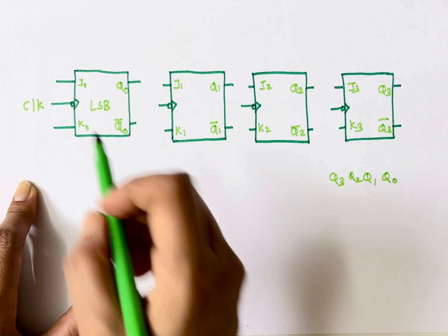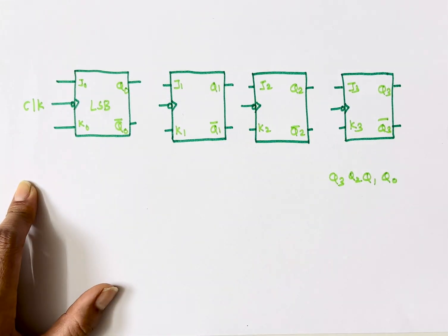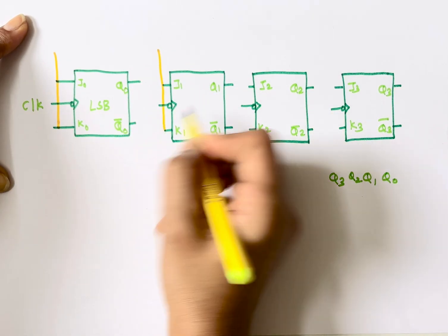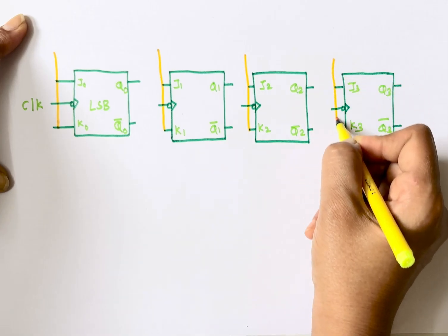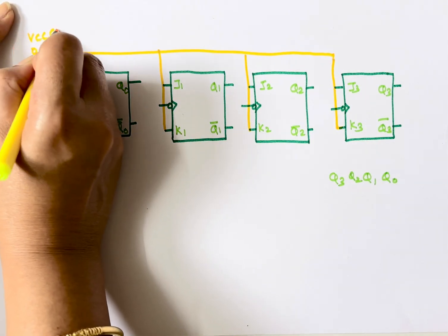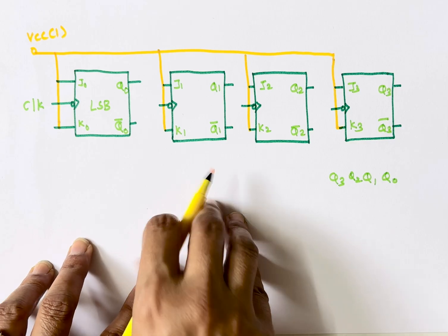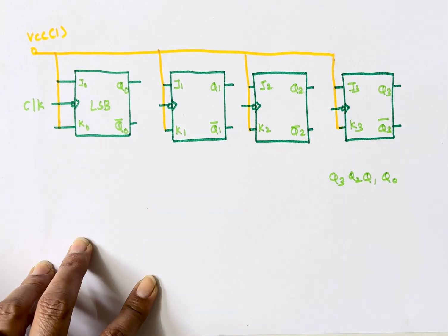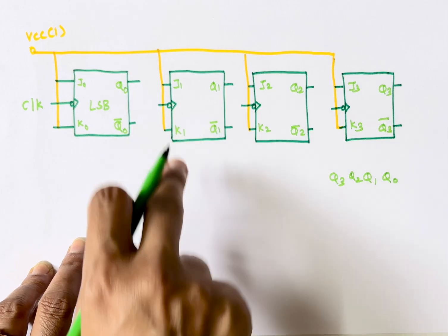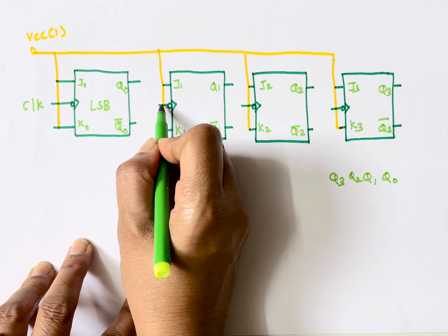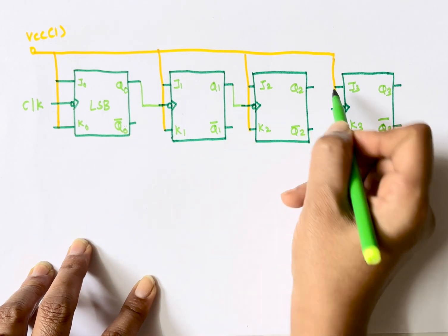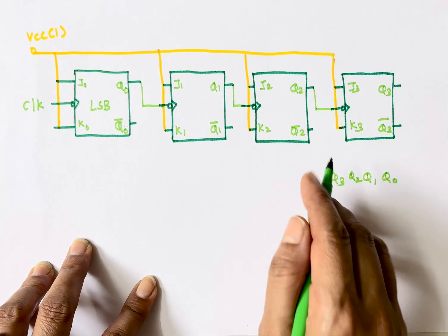All J and K inputs are shorted together and connected to VCC (logic 1). This is the up counter configuration. In an up counter, the Q output of the first flip-flop acts as the clock input to the next flip-flop. So Q0 connects to the clock input of the second flip-flop, Q1 to the third, and so on, making it count in the upward direction.